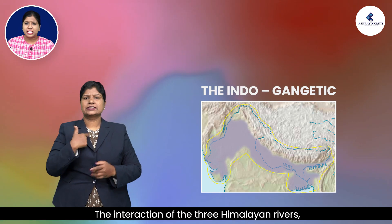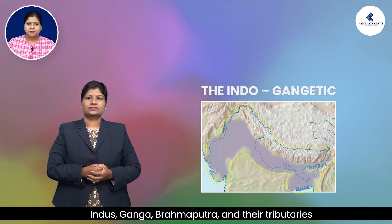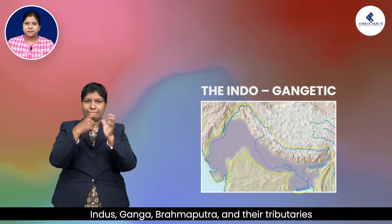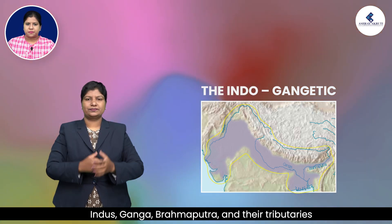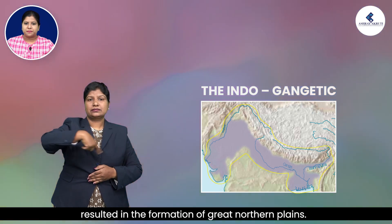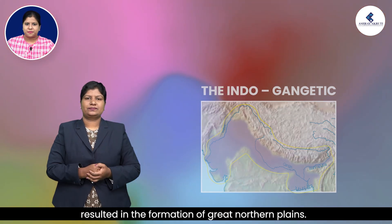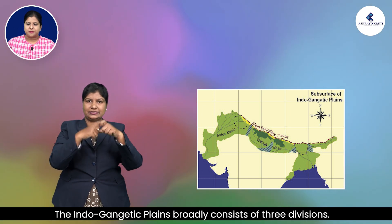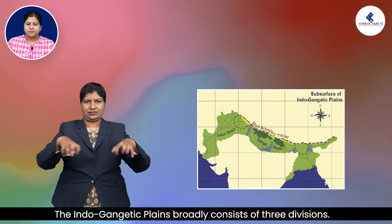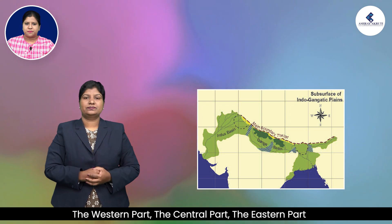The interaction of three Himalayan rivers — the Indus, Ganga, and Brahmaputra — and their tributaries resulted in the formation of the Great Northern Plains. The Indo-Gangetic Plains broadly consist of three divisions: the western part, the central part, and the eastern part.